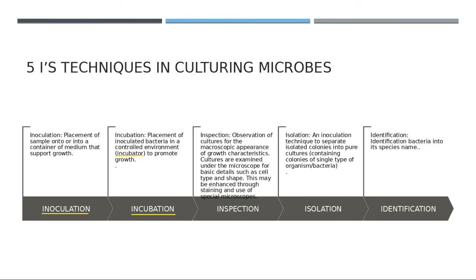After 24 or 48 hours, we take the sample out from the incubator and then we observe the result — how they look like. From these observations, you might be able to see different types of colonies with different shapes and different colors. This process is called Inspection — it's the third I.